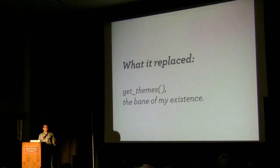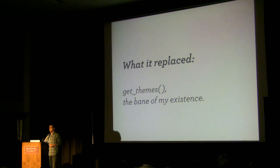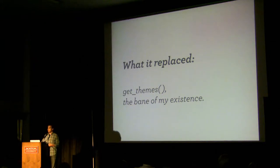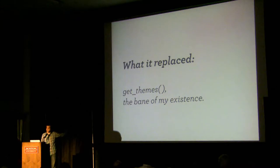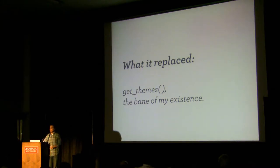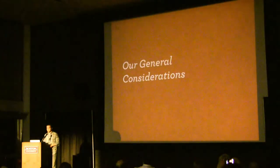What this replaced is a function called GetThemes, which was basically the most hated function in WordPress, at least from my point of view. Two years ago, I was a Google Summer of Code student for WordPress, actually working on a project that involved theming. I had a really difficult time because this function was so terrible. Two years later, I decided I could actually rewrite that function and make it a little better.